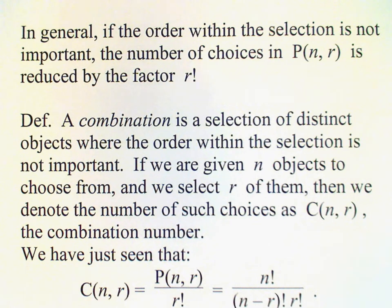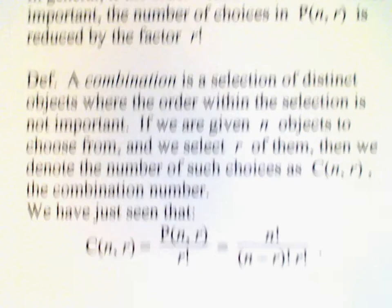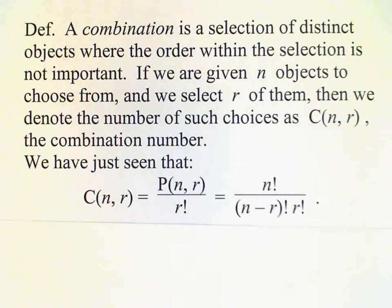And what we've just seen is that C(n, r) is directly related to P(n, r) by dividing by r factorial. So C(n, r) is equal to P(n, r) divided by r factorial.